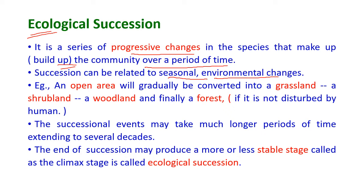For example, ecological succession happening in an open area: an open area will gradually be converted into a grassland first, then the grassland will be converted into a shrubland, shrubland will become woodland, and finally the woodland will be converted into a forest if undisturbed by humans. These successional events may take much longer periods of time, extending to several decades.